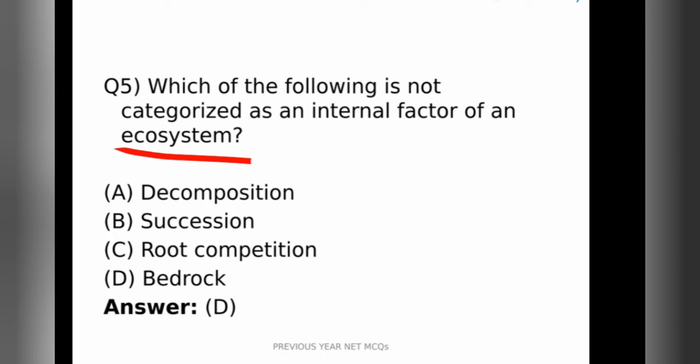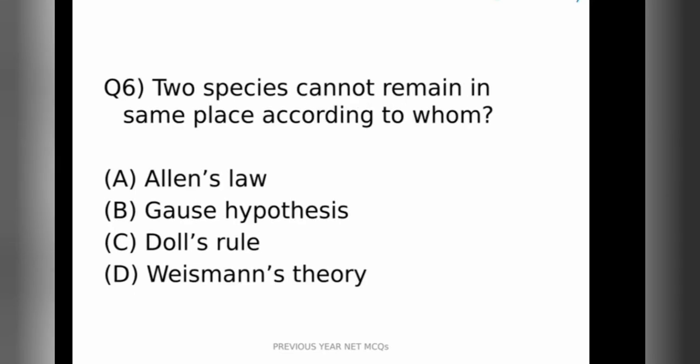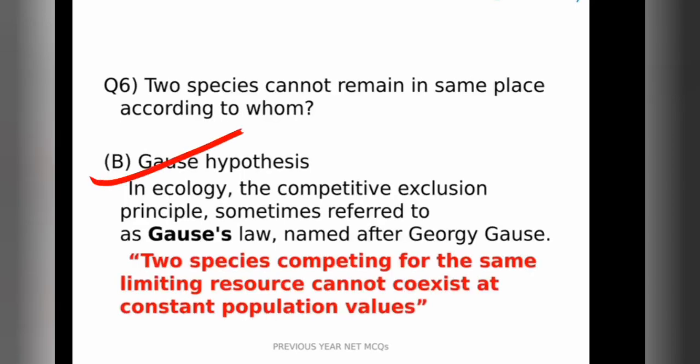Let's move to the sixth question. Sixth question says two species cannot remain in same place. So this was formulated by whom? Option A Allen's Law, Option B Gauss' Hypothesis, Option C Dahl's Rule, Option D Weisman's Theory. And the correct answer among the four is Option B, Gauss' Hypothesis.